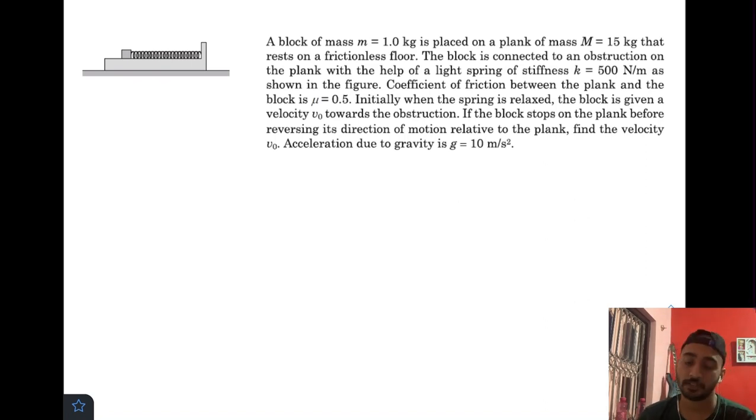In today's video, I have a question: a block of mass small m is placed on a plank of mass capital M that rests on a frictionless floor. The block is connected to an obstruction on the plank with the help of a light spring of stiffness k. Initially when the spring is relaxed, the block is given a velocity v₀ towards the obstruction. If the block stops on the plank before reversing its direction of motion relative to the plank, find the velocity v₀.